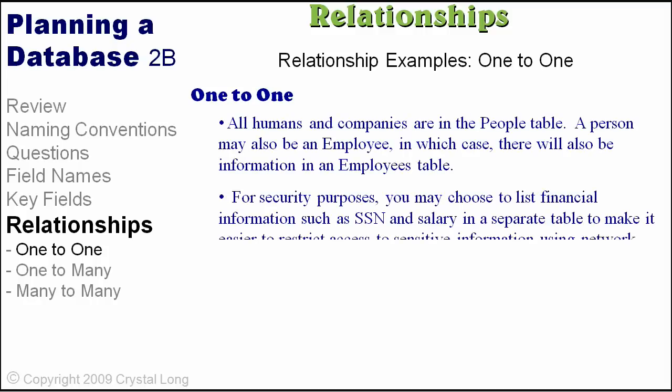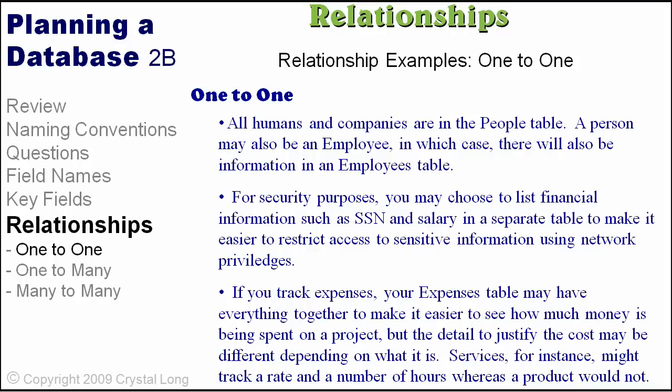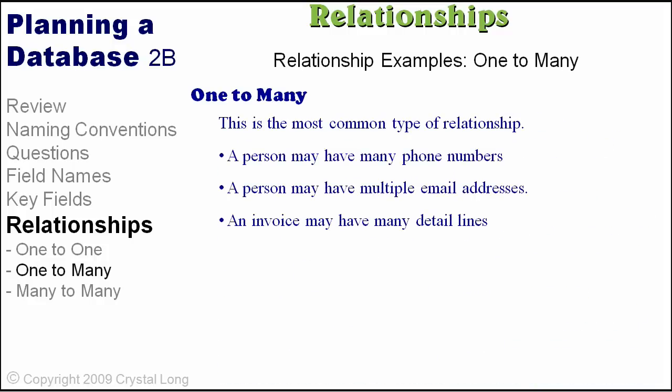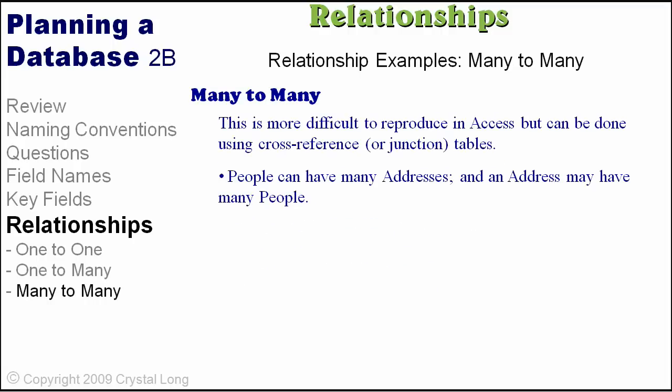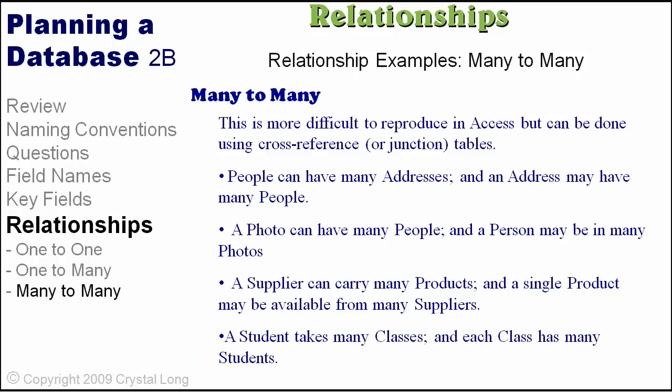One-to-one relationship examples: all humans and companies are in the people table; a person may also be an employee, with information in an employee's table. For security, you may choose to list financial information in a separate table. One-to-many relationship examples: a person may have many phone numbers; an invoice may have many detail lines; a music CD usually has many songs; a recipe has many ingredients. Many-to-many relationship examples: people can have many addresses and an address may have many people; a photo can have many people and a person may be in many photos; a supplier can carry many products and a single product may be available from many suppliers; a student takes many classes and each class has many students.